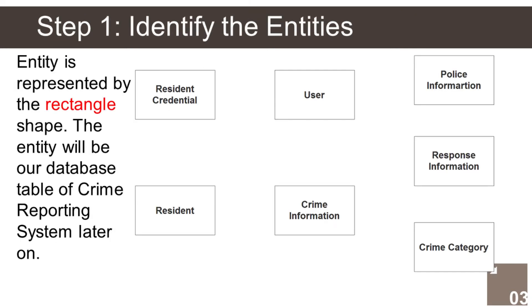Step 1: Identify all entities. An entity is represented by the rectangle shape. The entity will be our database table of the Crime Reporting System later on. In the Crime Reporting System we have the following entities: